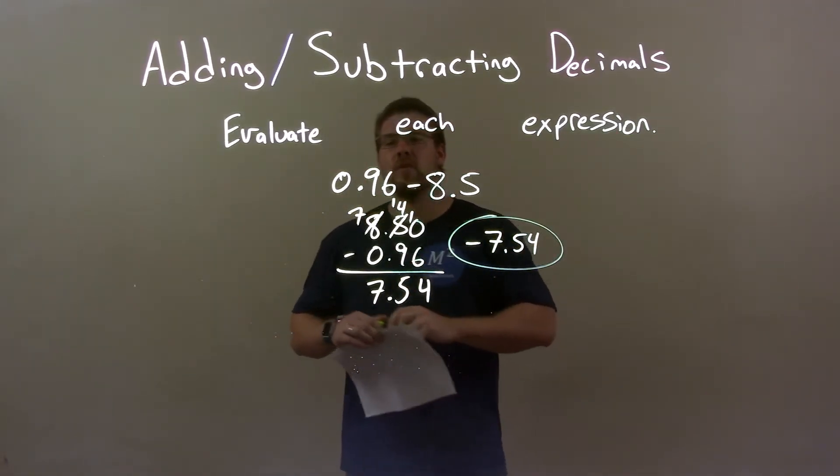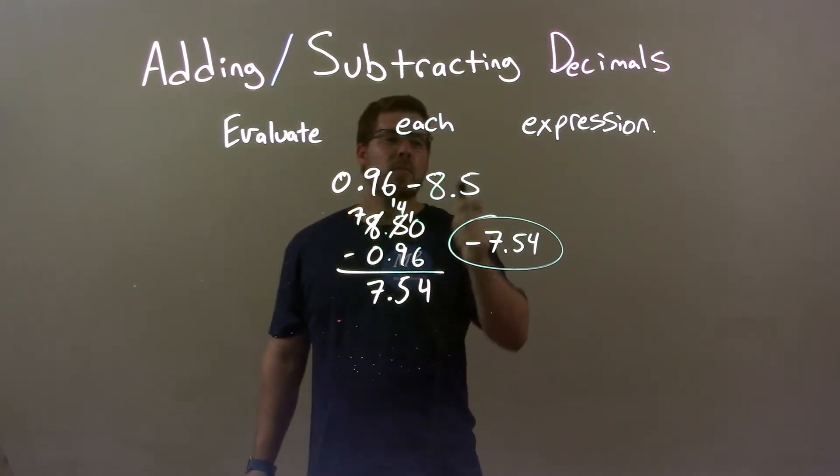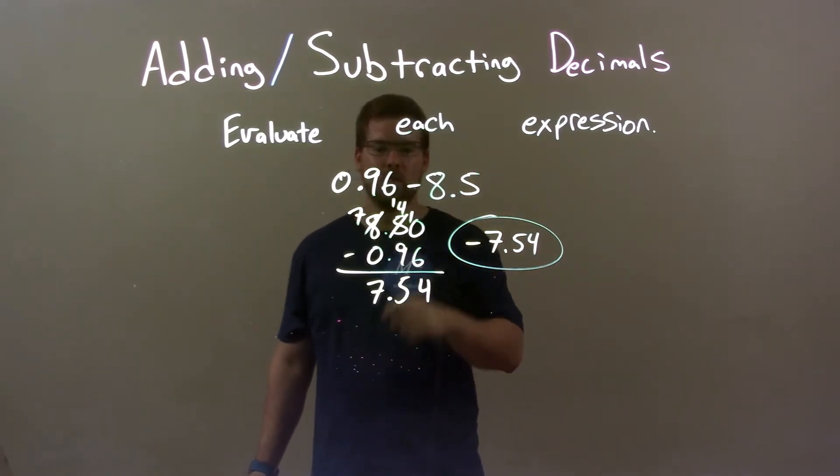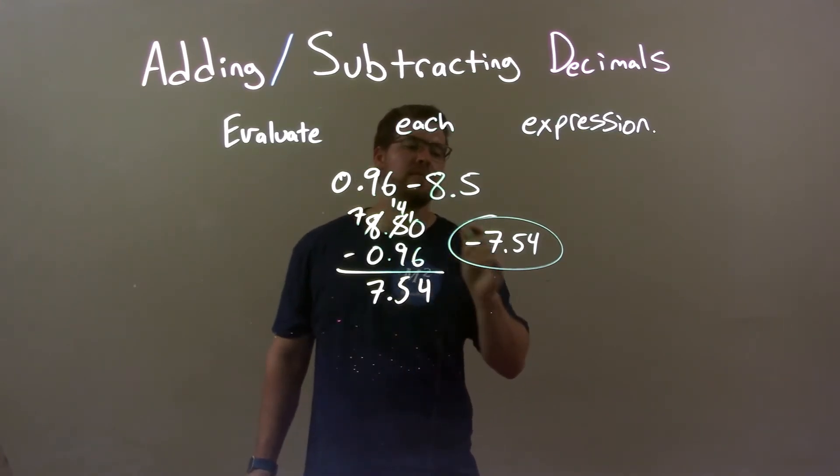Quick recap: we're getting 0.96 minus 8.5. Well, 8.5 is larger, making our final answer negative, so I just found the difference between these two numbers, which was 7.54, then put on the negative. Our final answer is negative 7.54.